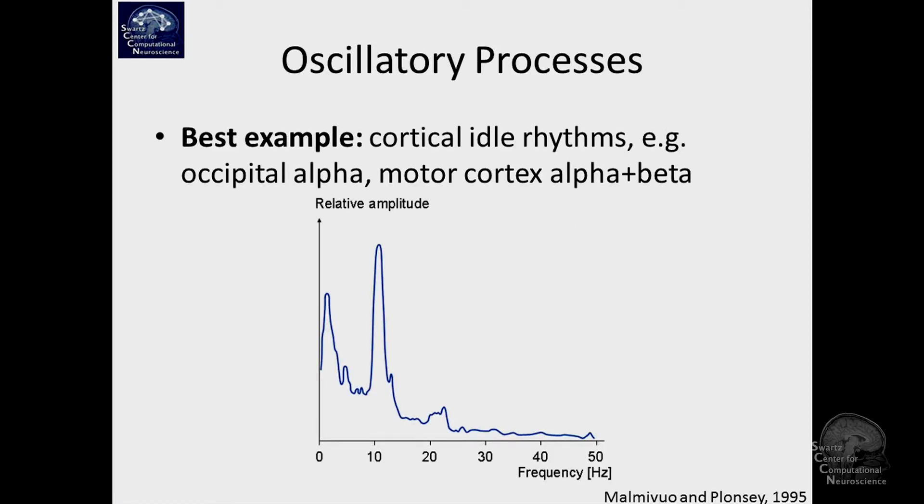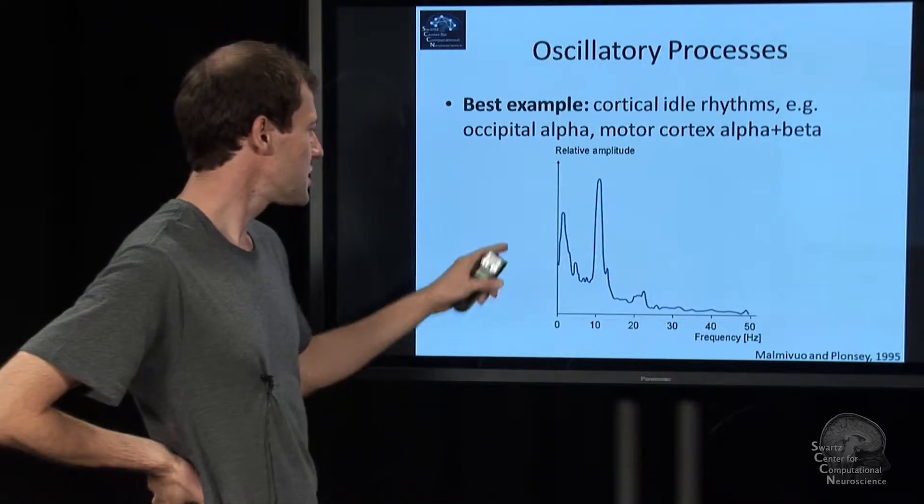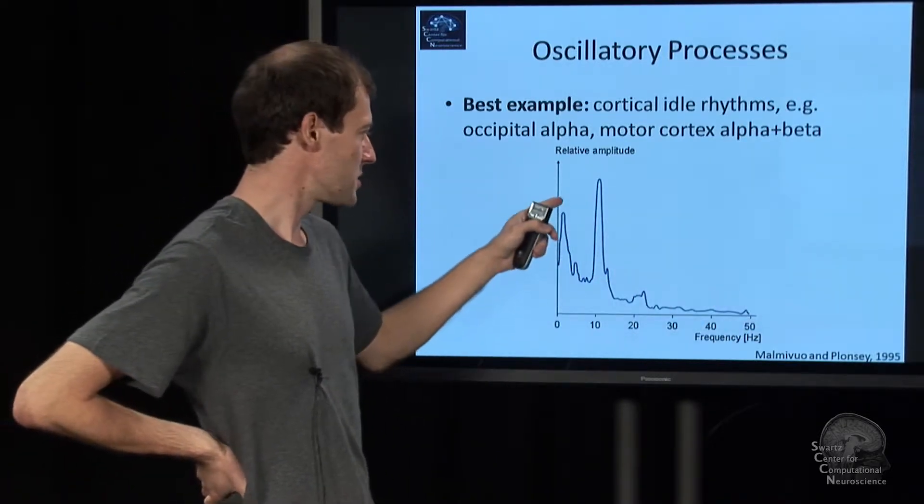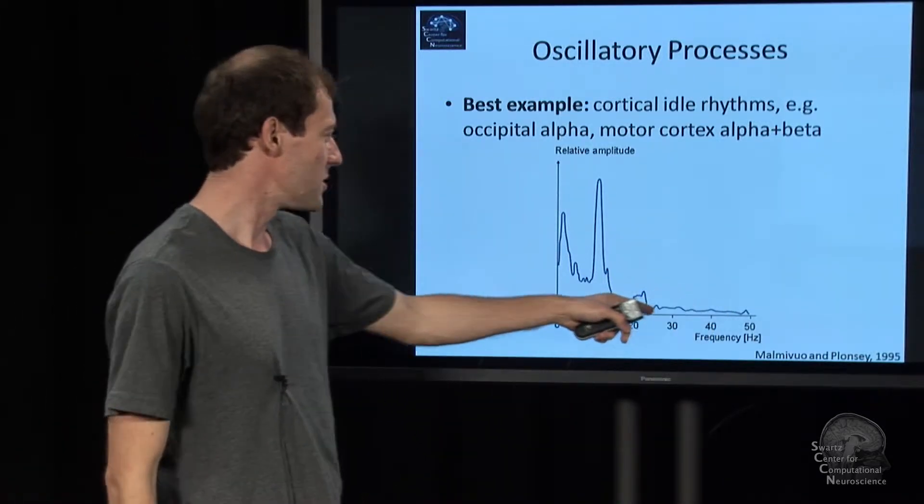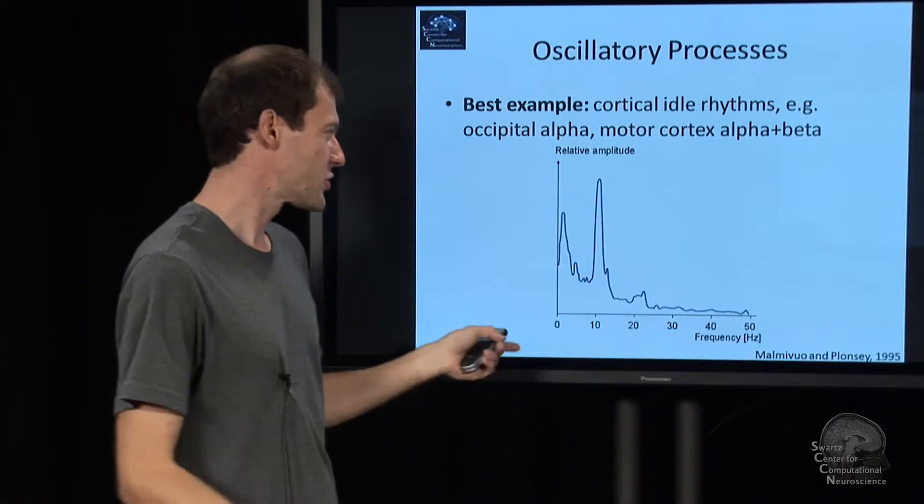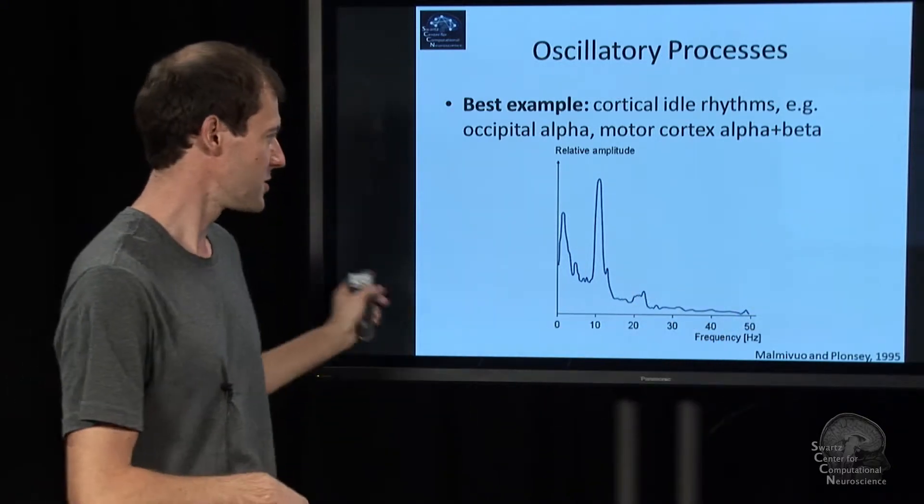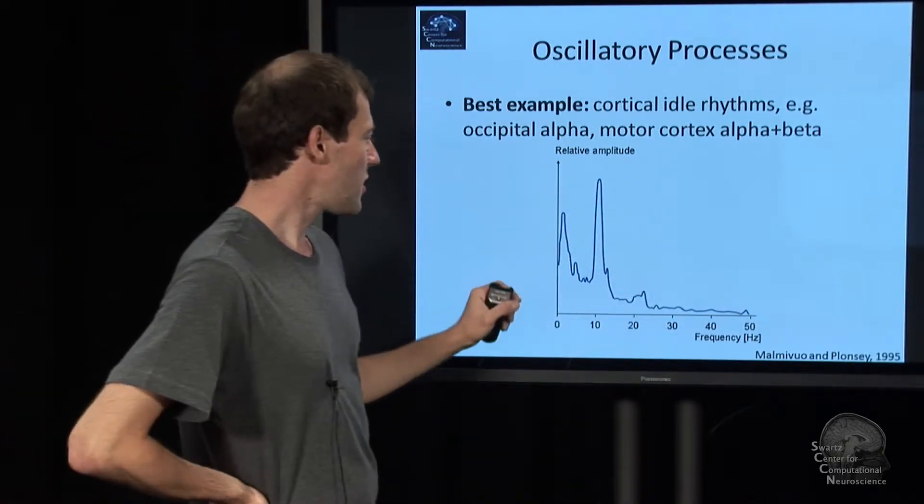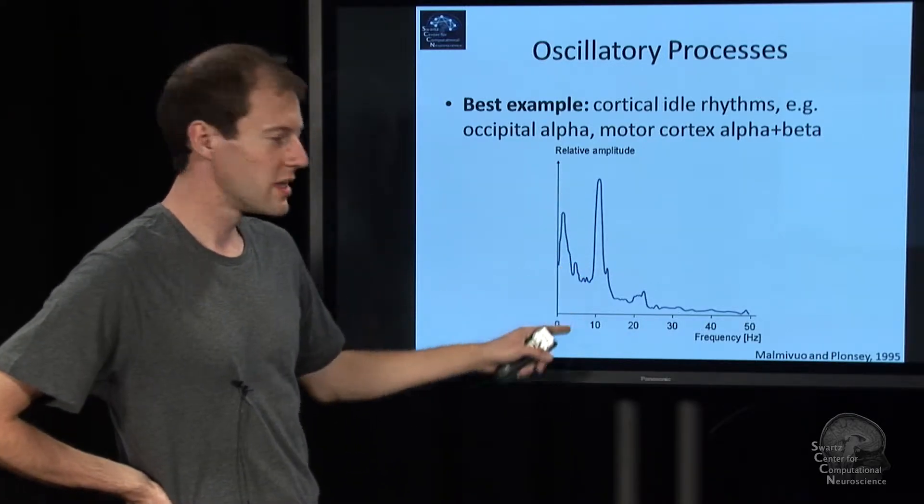Here's a spectrogram of some EEG of a person. The first thing you see is that there's some general fall off to higher frequencies - low frequencies have high power, high frequencies have lower power. That's called the one over F curve. Higher frequencies have more energy, so for equal energy you get lower power up there. But what sticks out is there are some very prominent peaks, like this one here at 10 hertz.